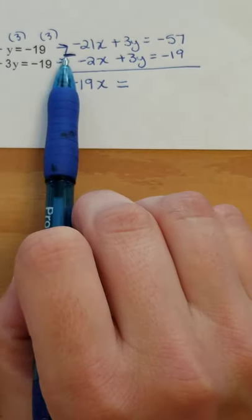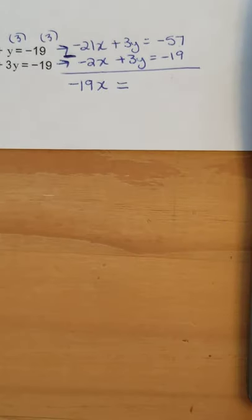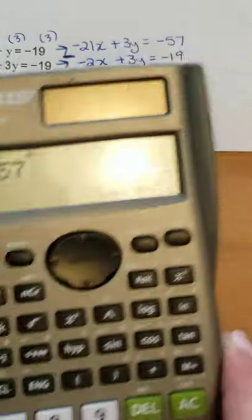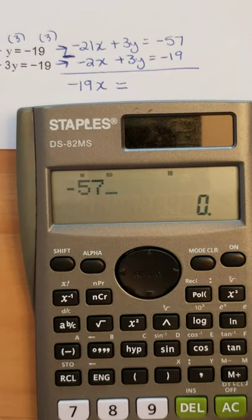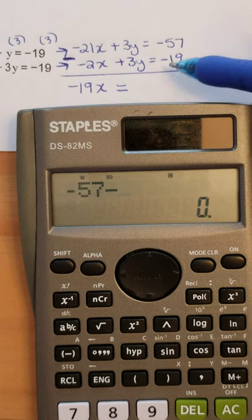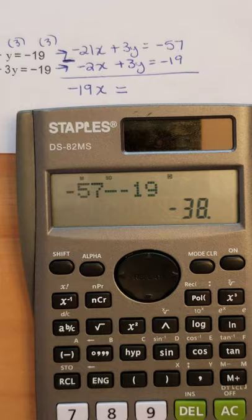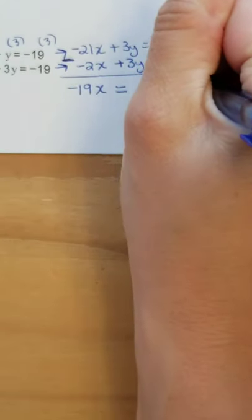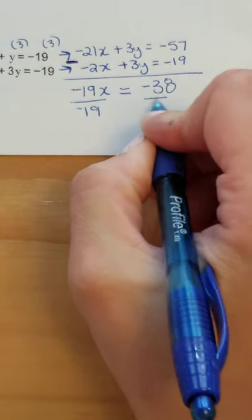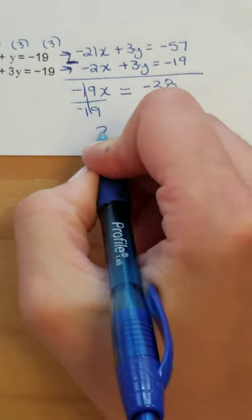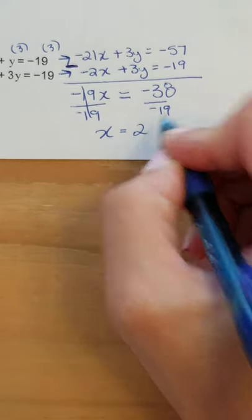Negative 57 minus negative 19. If you're not sure, just use your calculator. I'm going to use my calculator here. So I'm going to go negative 57. Okay, so I get negative 57. Then I have to do the minus. And then I have another negative 19. There you go, negative 38. Calculators are our friends. Now, to get x all by itself, I divide off that negative 19 and I get x equaling. Well, two negatives makes a positive for sure. 38 divided by negative 19 is 2. Okay.